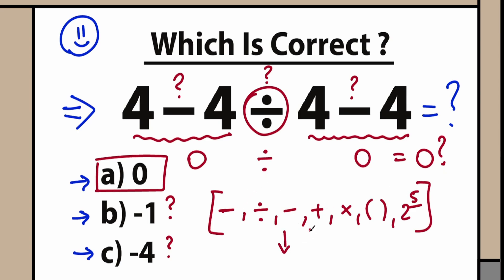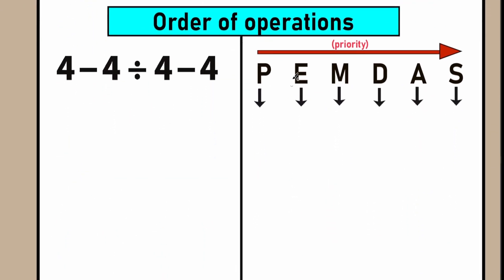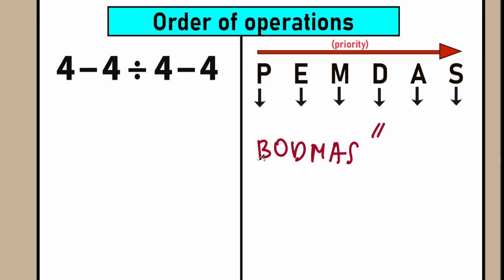Let's look closely and learn about order of operations, which is an extremely important part of our question. This order of operation is called PEMDAS. Of course it depends on what country you live in — if you live in the UK or India, you know about BODMAS. But this is absolutely the same thing, so we can put an equal sign between them.